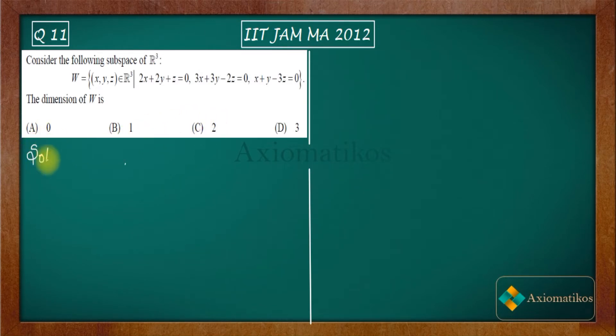We have this W which consists of those elements from R cube such that they satisfy these three equations: x + y + z = 0, 3x + 3y - 2z = 0.